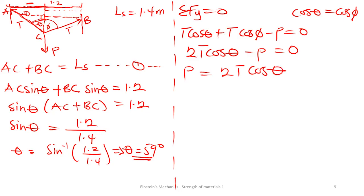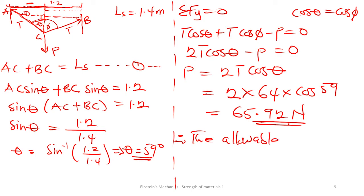We know the value of T. It is going to be 2 times what is the tension? The tension we saw is 64 multiplying cos, what is the angle? We have 59. And P is going to give us 65.92. So this is the allowable load, therefore the allowable load is 65.92 Newtons. This is the load that P is having.